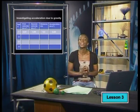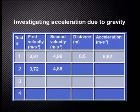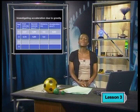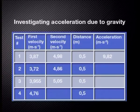This value is very close to the accepted value of acceleration due to gravity of 9.8 meters per second squared. Let's do another 3 tests and record the results. In test 2, the first velocity reading is 3.72 meters per second and the second velocity reading is 4.86 meters per second. The distance is still half a meter. In test 3, the initial velocity is 3.955 meters per second and the final velocity is 5.05 meters per second. In test 4, the initial velocity was 4.76 meters per second and the final velocity was 5.69 meters per second.